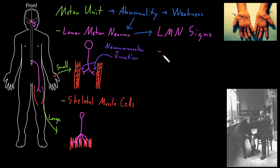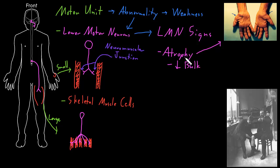The first lower motor neuron sign is atrophy of skeletal muscle. Atrophy means decreased bulk of skeletal muscle — decreased size. Here's a photograph of a person who has a lower motor neuron abnormality causing atrophy. Lower motor neurons were innervating skeletal muscle cells in part of the hand on both sides, but some abnormality at the wrist injured these lower motor neurons heading toward the hand muscles. If you look at those particular muscles, they have shrunk, shriveled up, and wasted away — that is atrophy of those skeletal muscles.